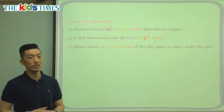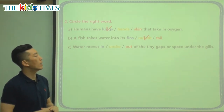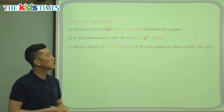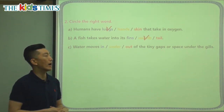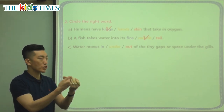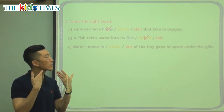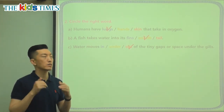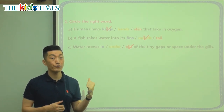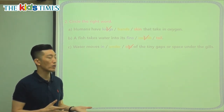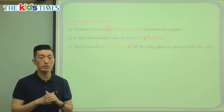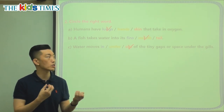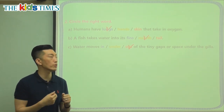The last question: water moves in, under, or out of the tiny gaps or space under the gills. When we see the fish, they take in water through the mouth and then it goes out of the tiny gaps or space under their gills. So fish breathe just like you and me, but using different parts — we use our lungs, fish use their gills, and there's oxygen inside water that the fish remove and separate as they take it in through their mouth.